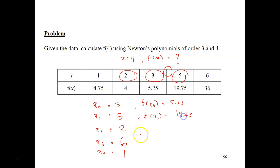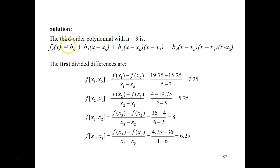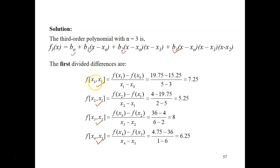Now that we have listed all the data points, we plug them into the equations. For the third order polynomial we have b0, b1, b2, and b3. To calculate b1 you need the first divided differences involving all data pairs in sequence: x0 and x1, then x1 and x2, then x2 and x3, and x3 and x4.